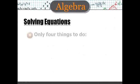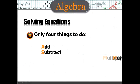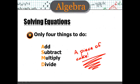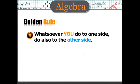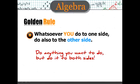Solving equations. Only four things you can do to solve an equation. And that's add, subtract, multiply, and divide. And most of you should find that a piece of cake. And then a really important part of algebra is the golden rule of algebra. Or what I call the golden rule of algebra. And that is, whatsoever you do to one side, do also to the other. You can do anything you want. But do it to both sides. Very important in order to keep the balance of the equation.